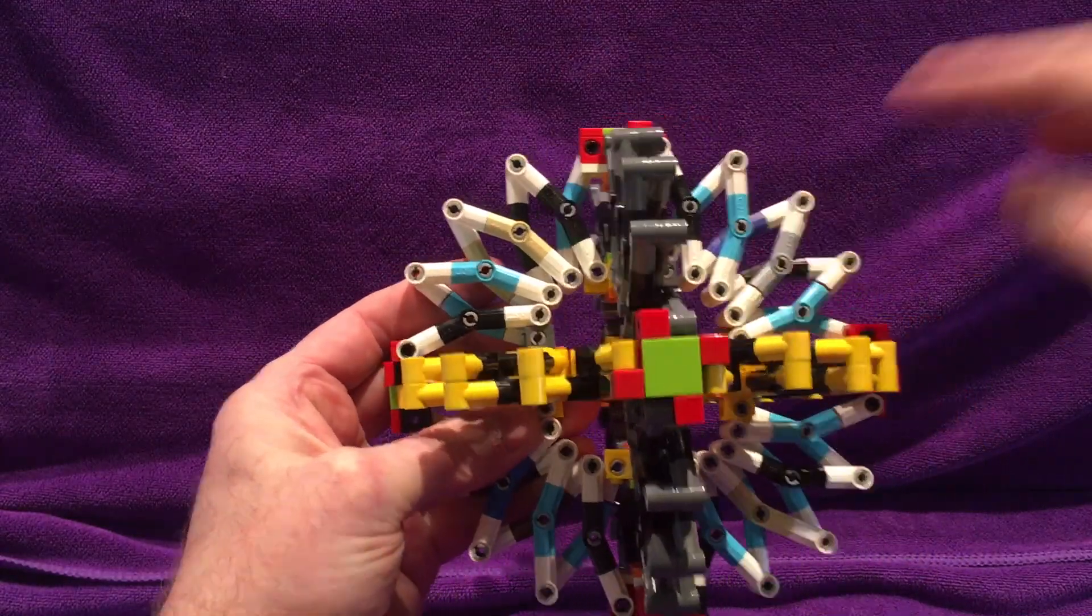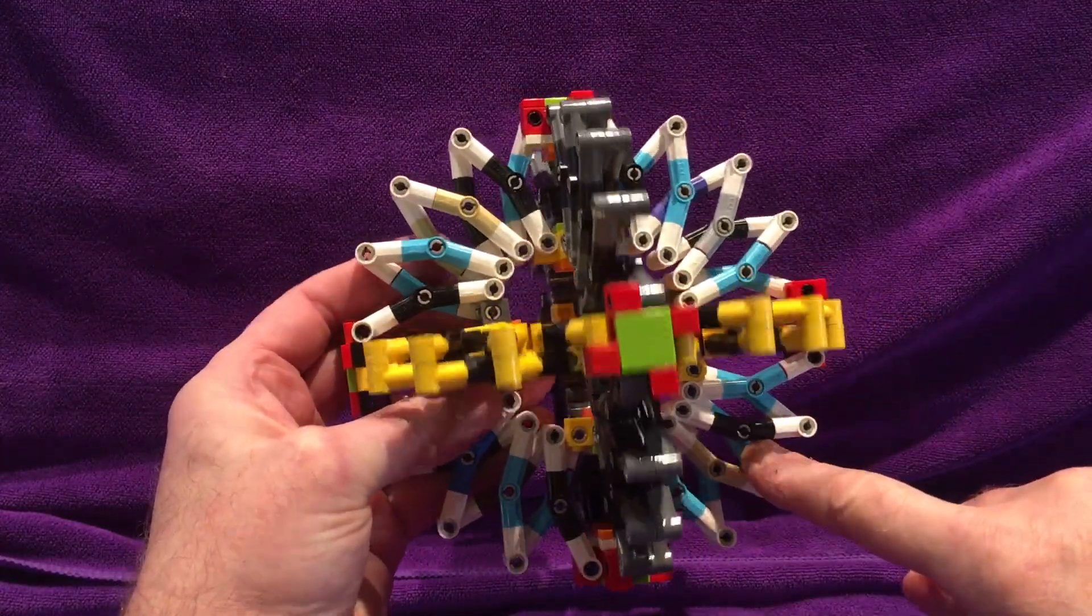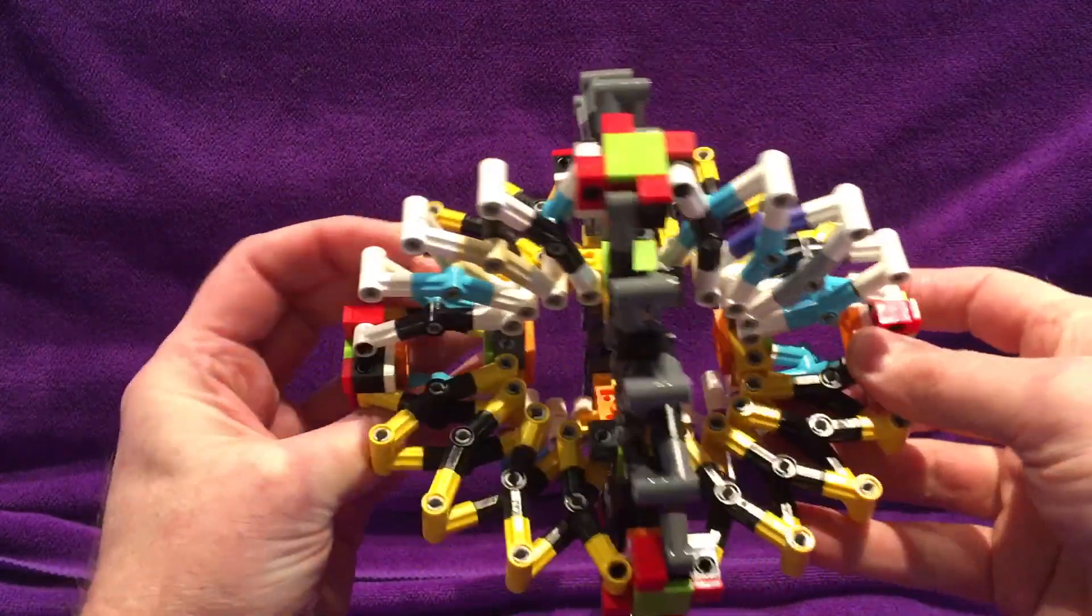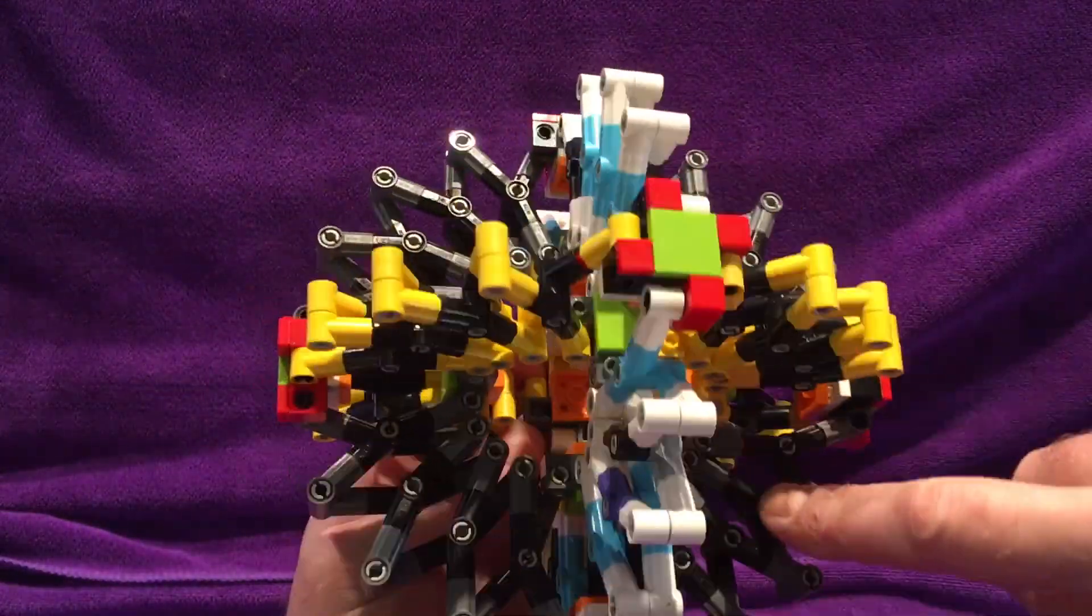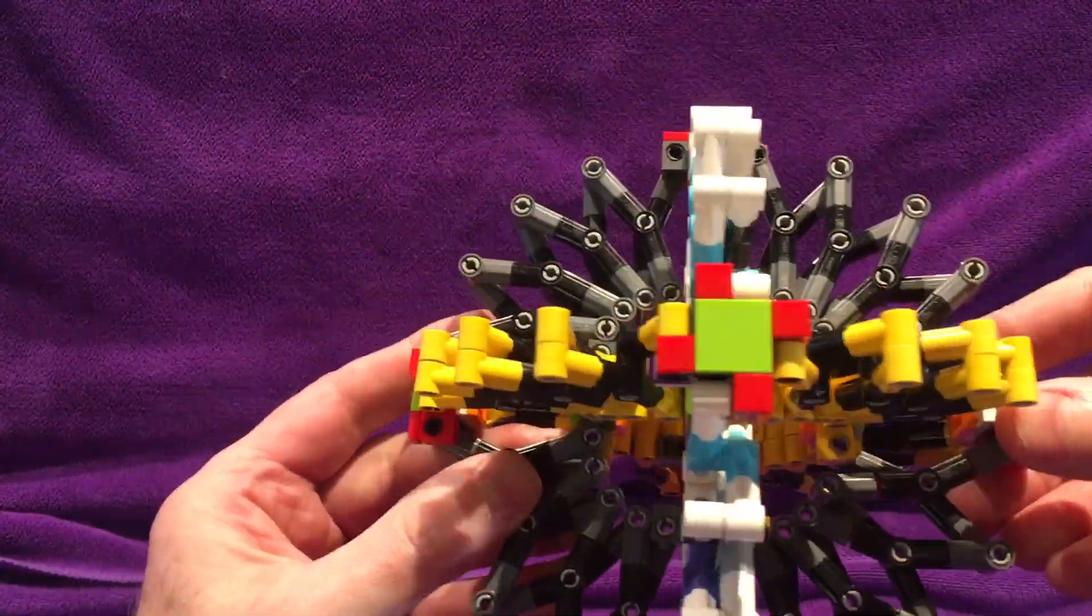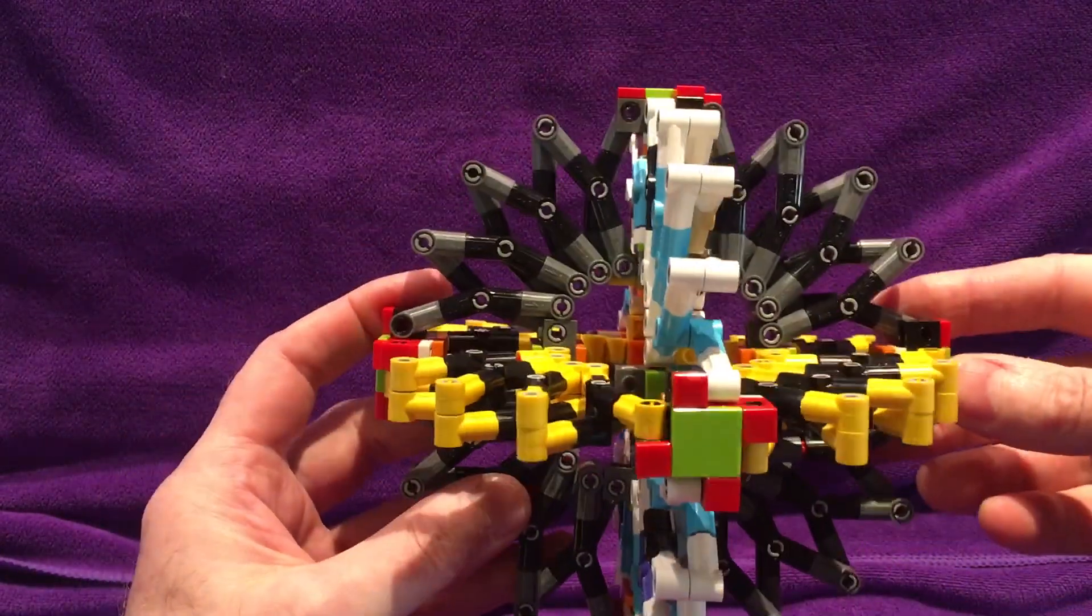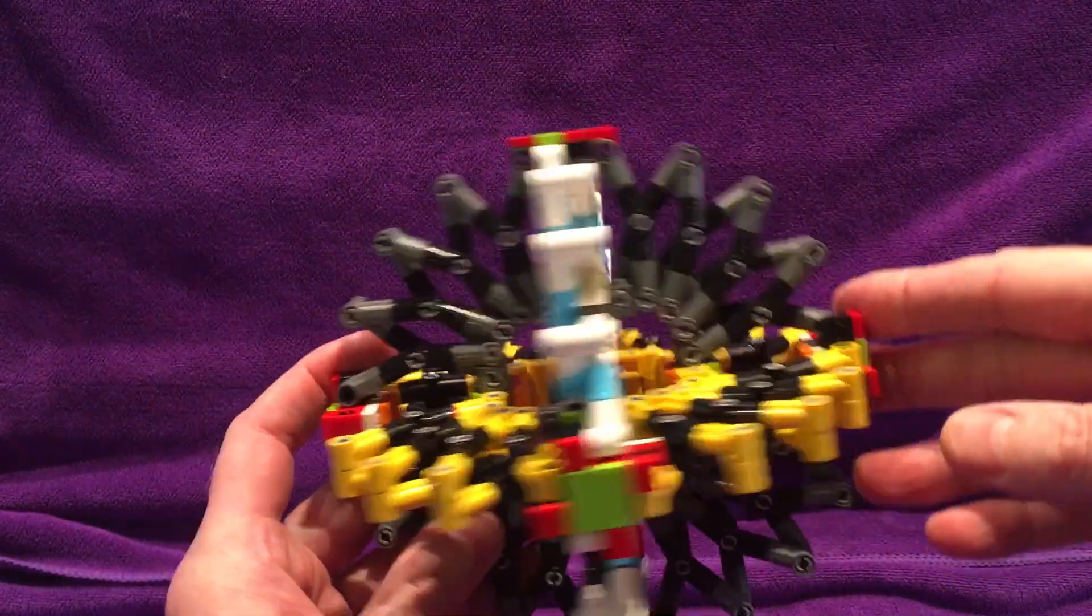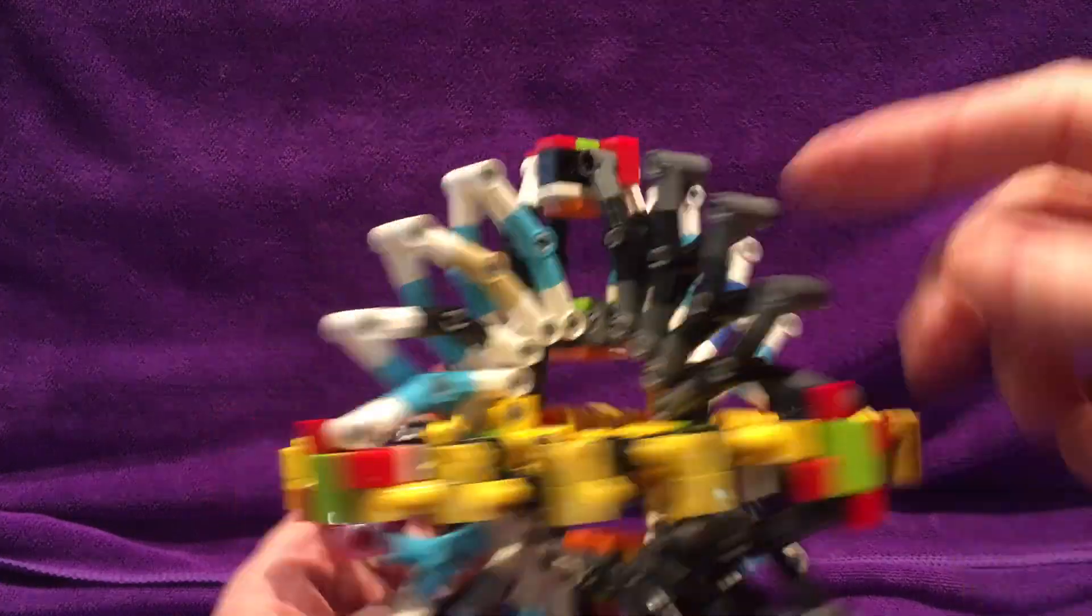So for this Hoberman sphere, we have one half circle, two half circles, three half circles, four half circles, five half circles, six half circles. This Hoberman sphere uses six half circles. You'll see some more Hoberman spheres here in a bit that use four half circles using these junction boxes.